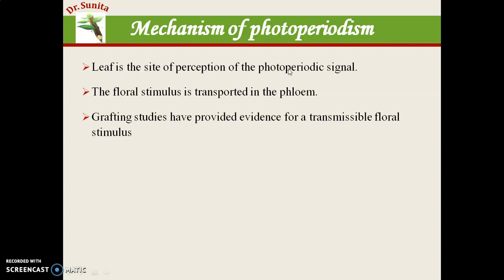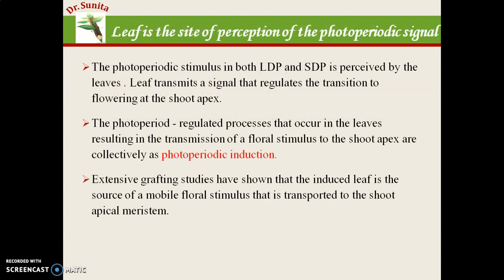The leaf perceives the photoperiodic signal and light, then the signal is transported to the floral meristem. The floral stimulus is transported through the phloem from the leaf to the floral meristem. This has been proved through various grafting studies that provide evidence for this transmissible floral stimulus. When phloem was destroyed in experiments, the stimulus was not transported; when other tissues were destroyed but phloem remained intact, the stimulus was transported.